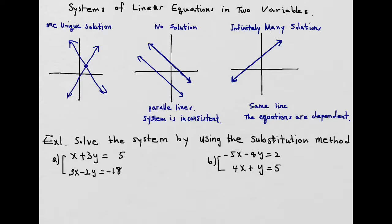A system with two variables means you're looking at two equations, because in order to solve two unknowns you have to have two equations.